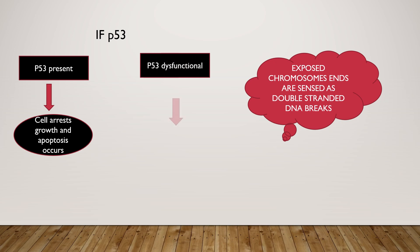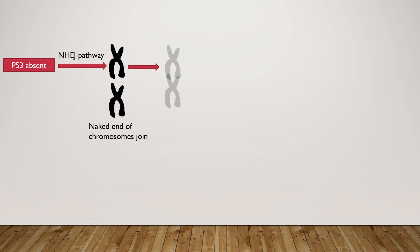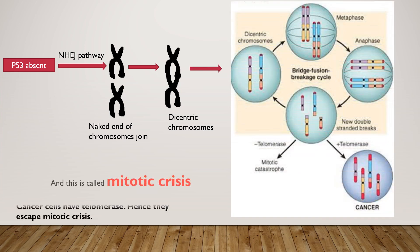But what if p53 was dysfunctional? When p53 is dysfunctional, the cell emerges through the non-homologous end-joining pathway. Here, the naked ends of two chromosomes join and form dicentric chromosomes. These dicentric chromosomes are pulled apart at anaphase, and mitotic catastrophe and cell death occur.